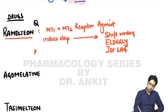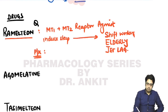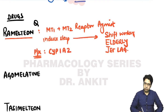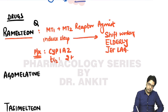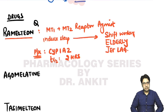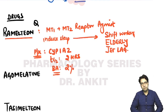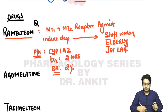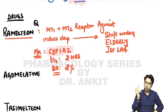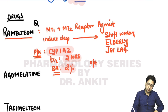Regarding the pharmacokinetics of ramelteon: it is metabolized by CYP1A2. Its half-life is 2 hours. Its oral bioavailability is only 2%, but this 2% that enters the blood is sufficient to induce sleep.